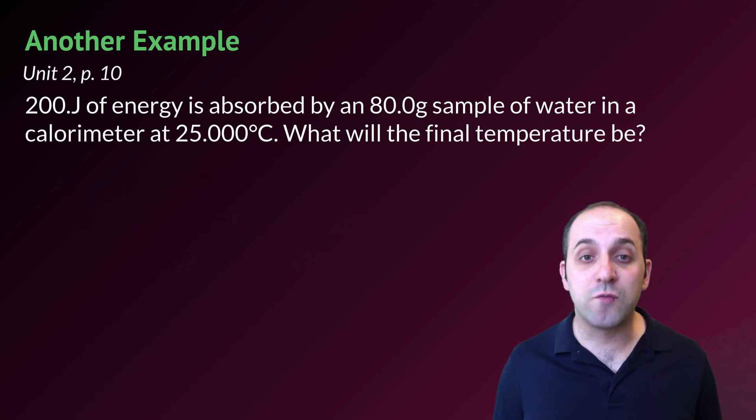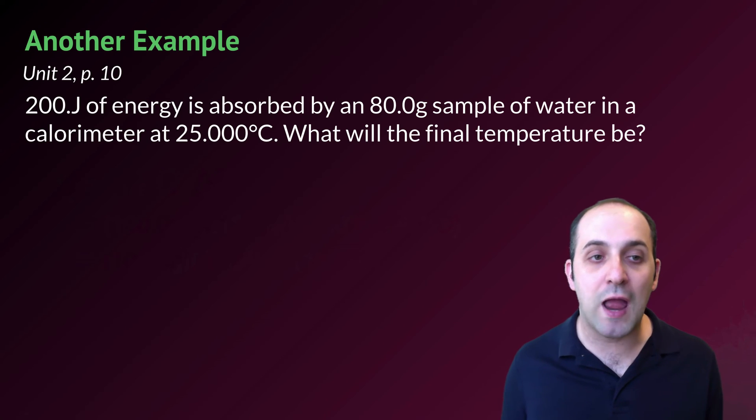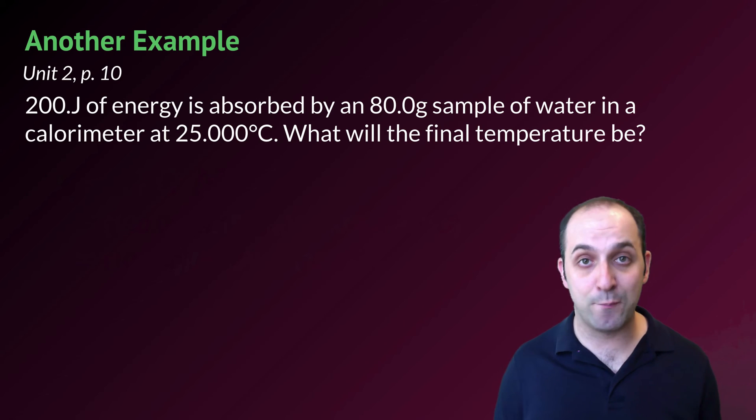This problem is from page 10 in your packet. 200 joules of energy is absorbed by an 80.0 gram sample of water in a calorimeter at 25.000 degrees Celsius. What will the final temperature be? Take a moment and do this on your own, or at least try to, and pay attention to where you get stuck or any questions that you have. And then when you're ready, play the video through and let's go through the solution.